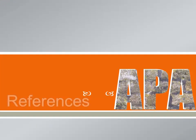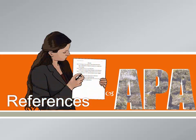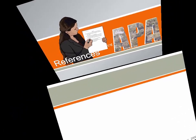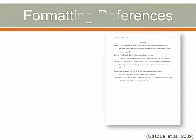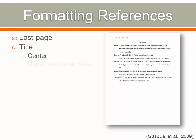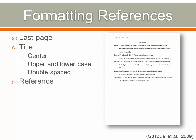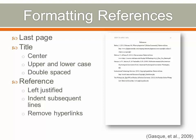One purpose of the citation is to help readers locate the source in the reference list, and references are formatted with the goal of helping the reader locate the original document. References are placed on the last page. The title "References" is centered. References are double-spaced. Each reference begins flush left, and as the reference wraps to the next line, the remainder is indented. When listing an online reference, be sure to remove the hyperlink from the web address.